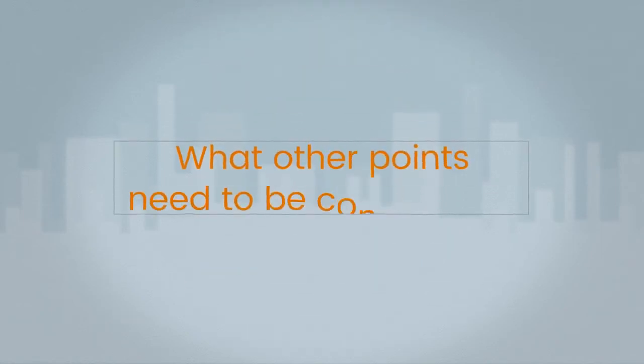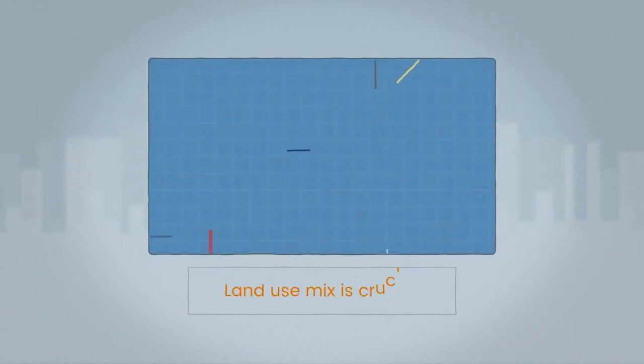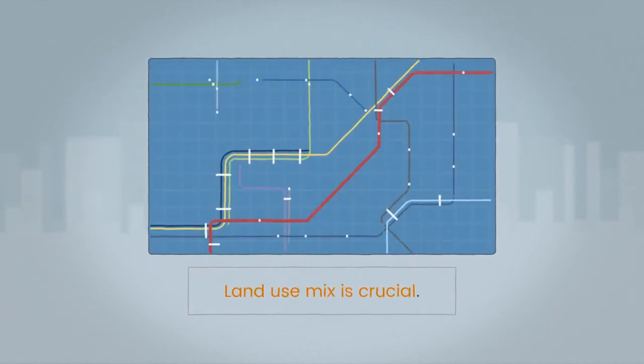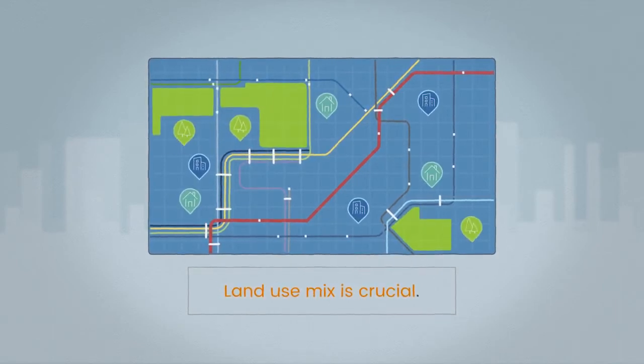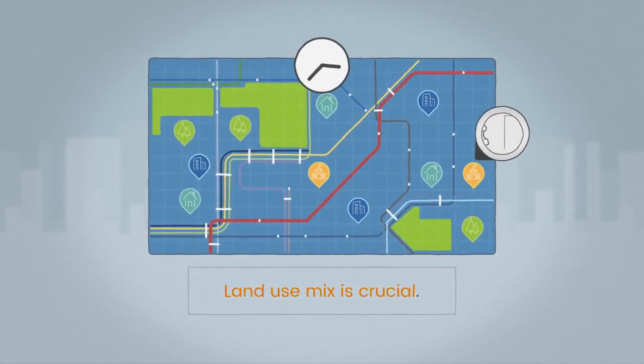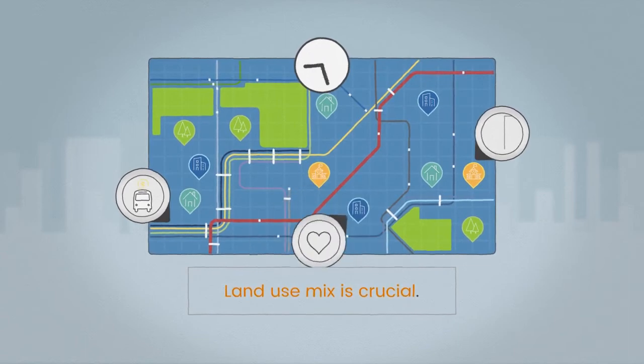What other points need to be considered? Land use mix is crucial. Linking people to their homes, offices, places of recreation and education, allowing them to come and go 24 hours a day, results in more people entering and exiting stations, making a financially sustainable public transport system that serves the people.